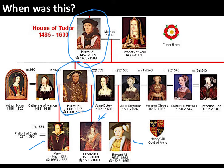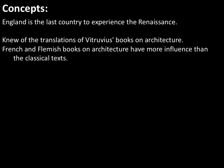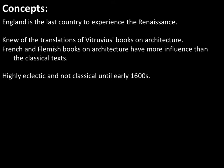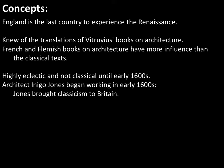Because of the distance, England turned out to be the last country in Europe to experience the Renaissance, which started all the way down in the boot of Italy. By the time Renaissance ideas worked their way to England, everyone knew about Vitruvius's books from ancient Rome, and the French and Flemish had made their own books on architecture that started to dominate. So in the 1400s and 1500s we're seeing highly eclectic and not at all classical structures. But then Inigo Jones begins working in the very early 1600s and brings the classic ideal of the Italian Renaissance to Britain, in his own way with his own twists.